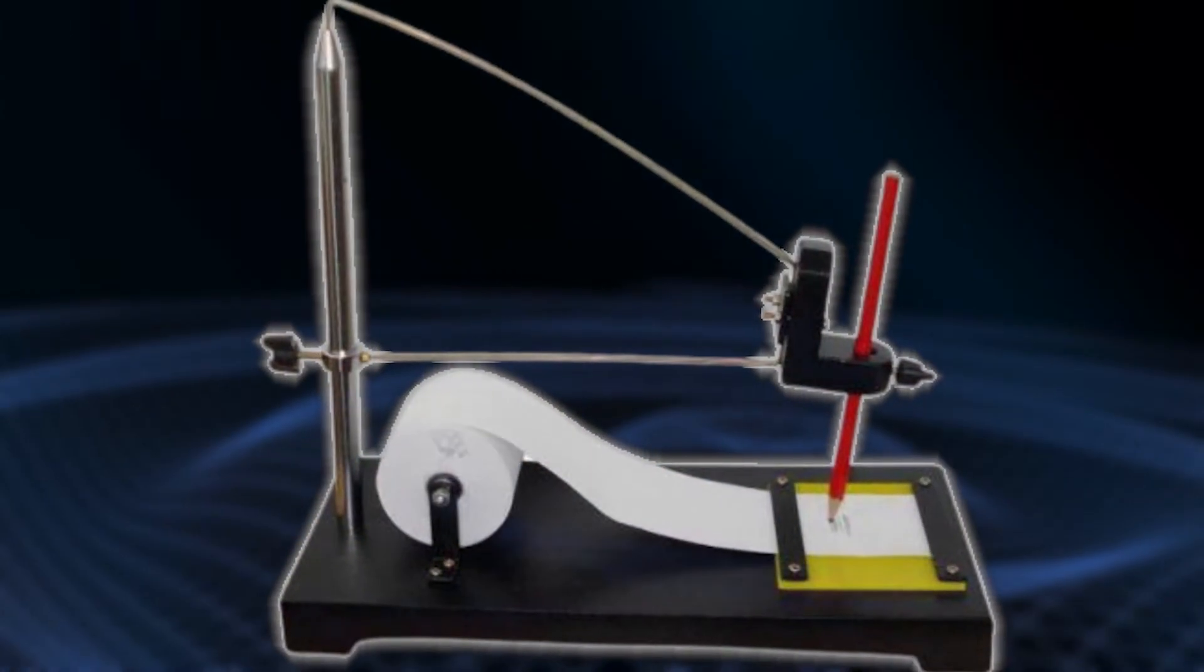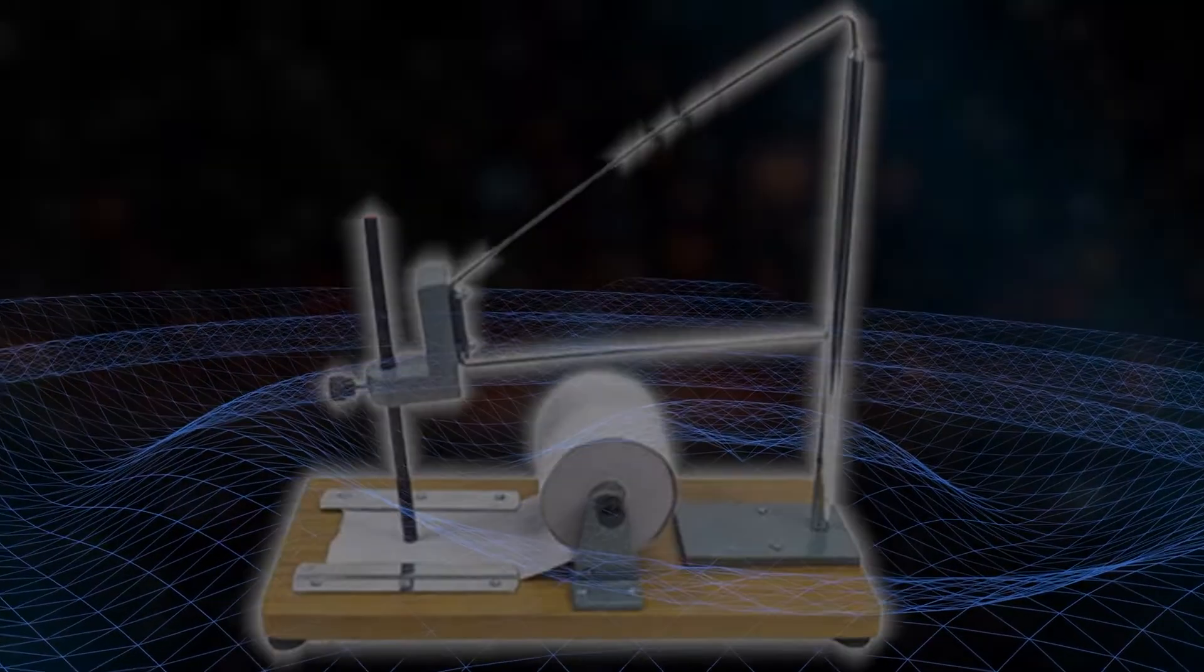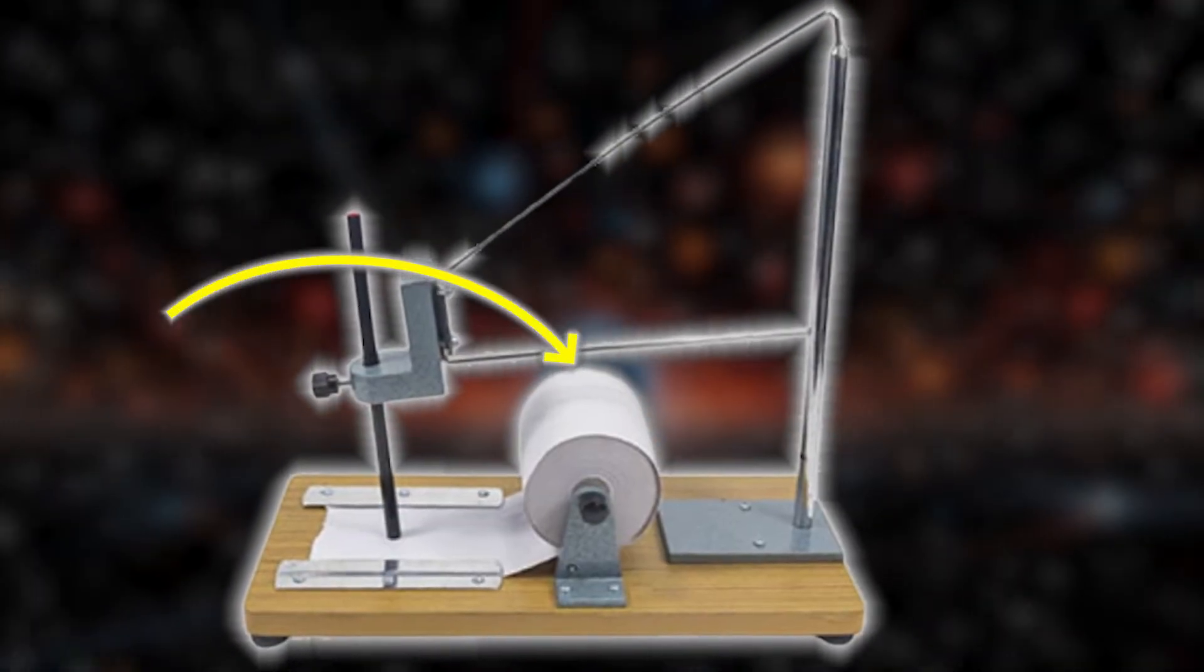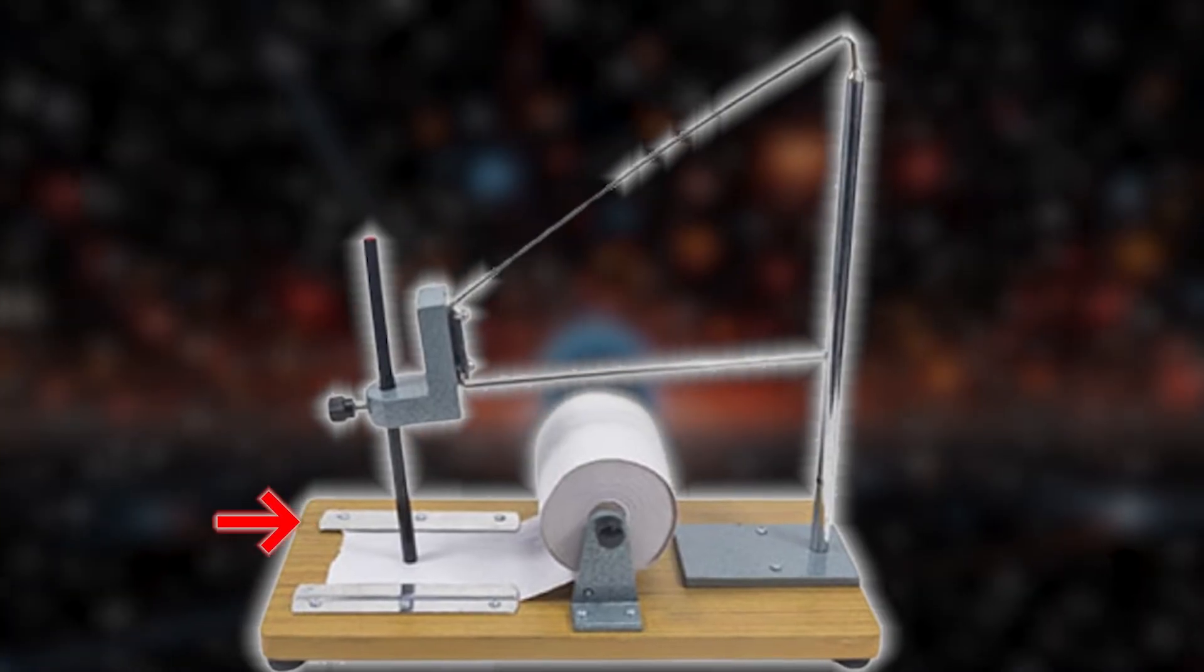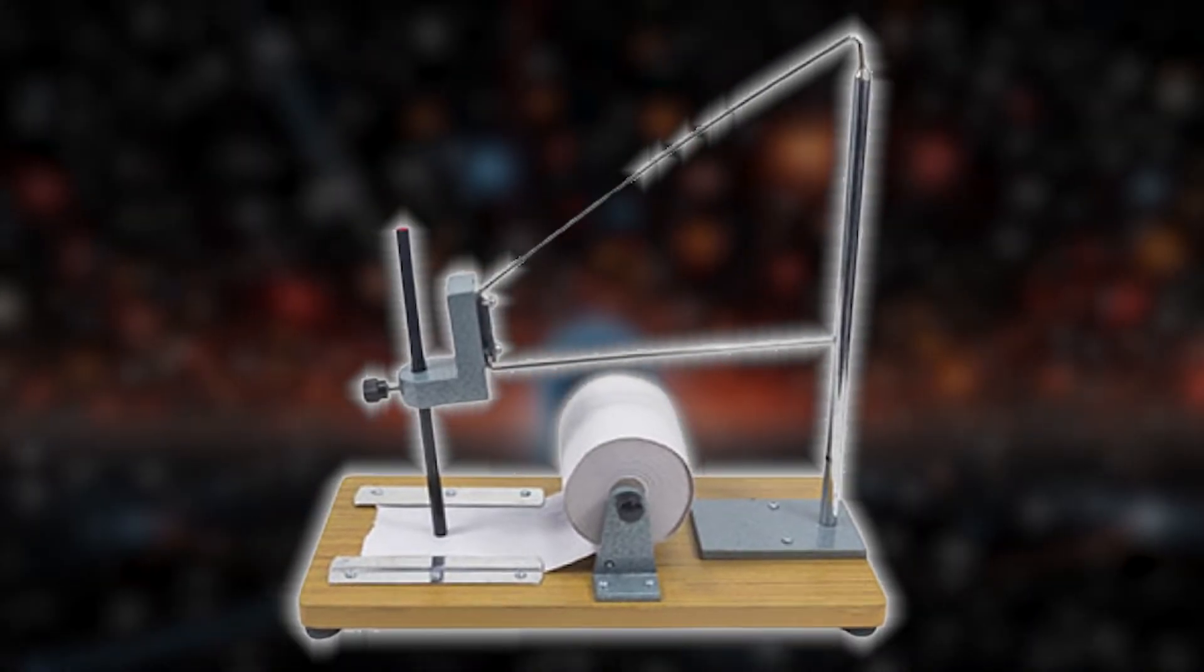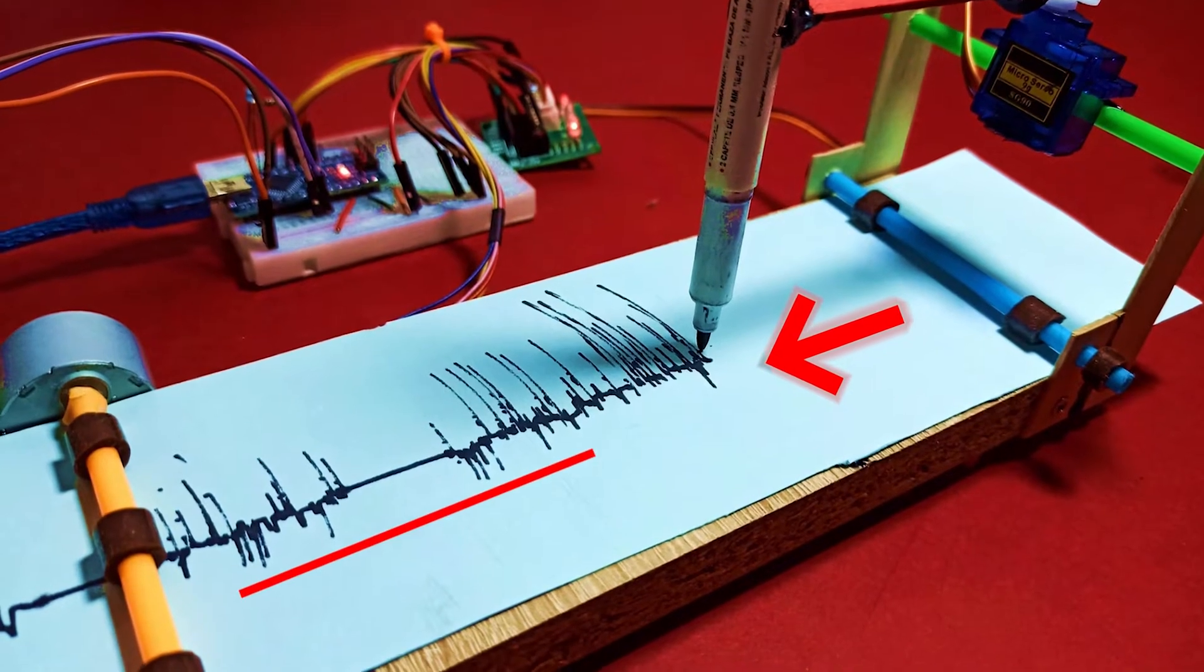This setup could record tremors in the Earth's crust. If you used a roll of paper and a motor that slowly pulled the paper across the table, you could record tremors over time.